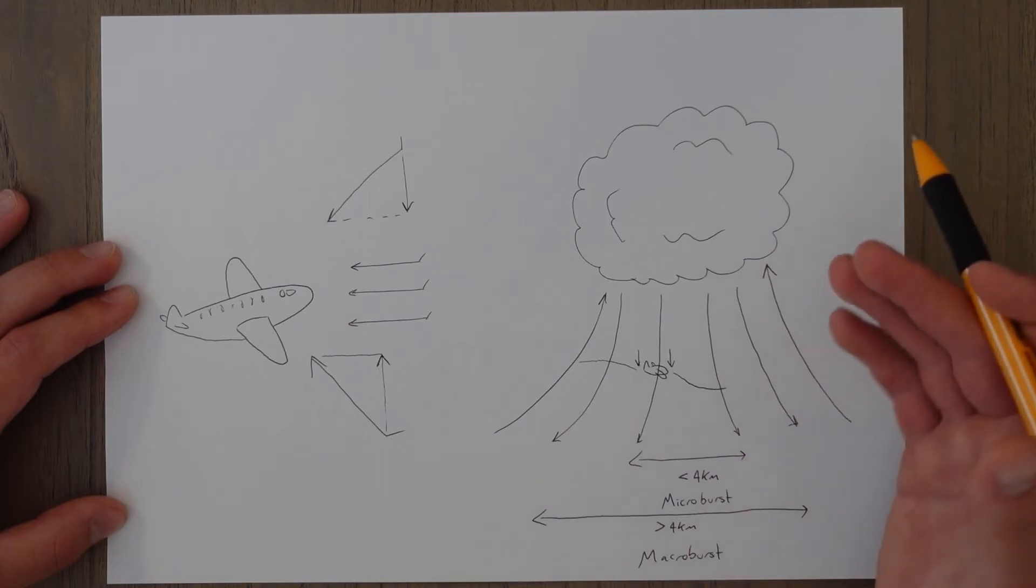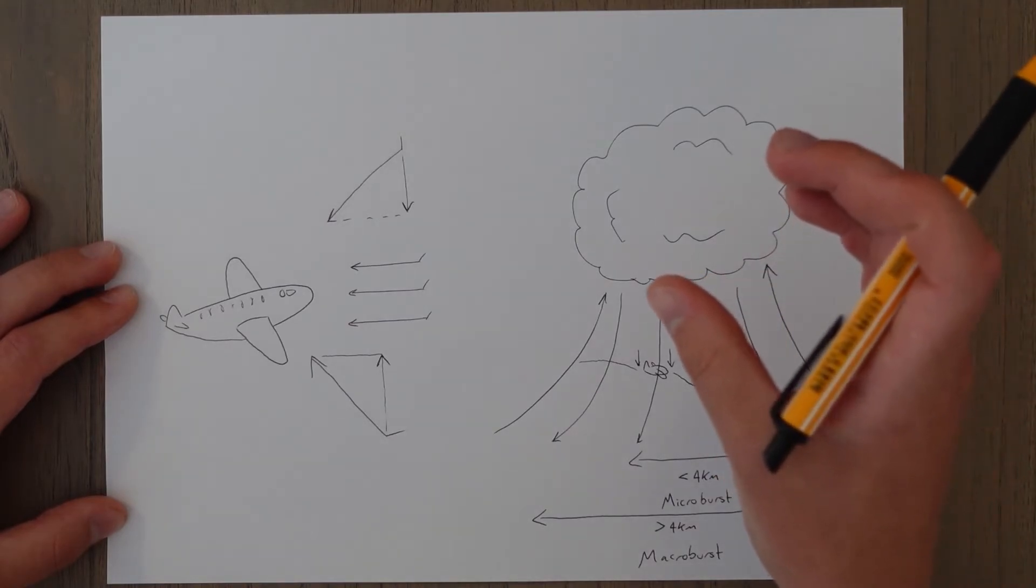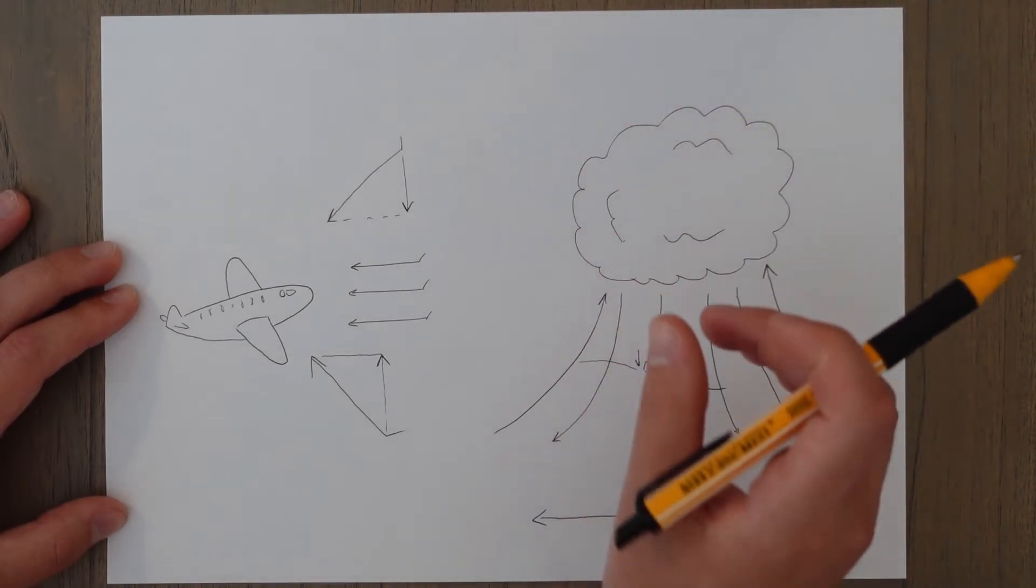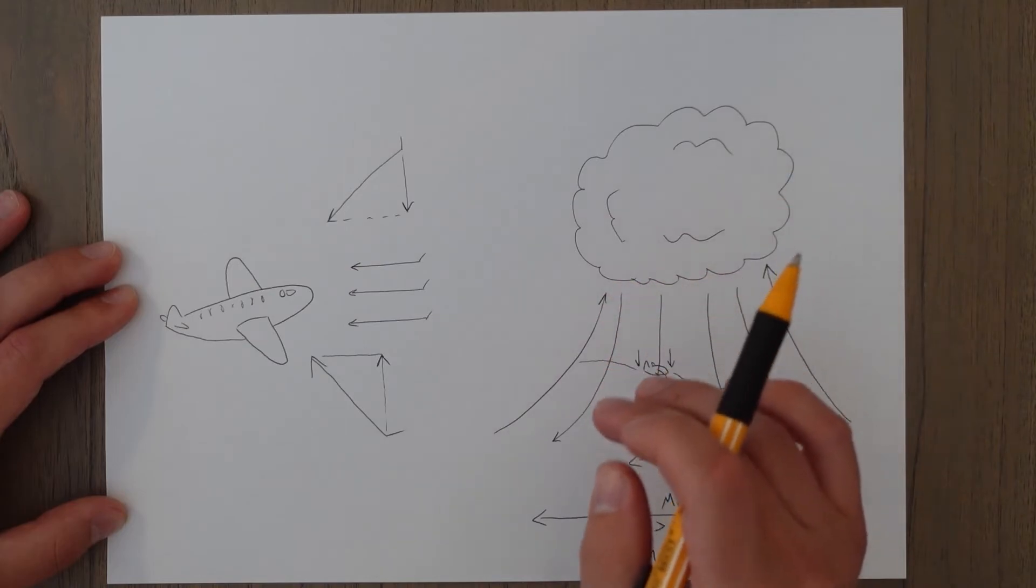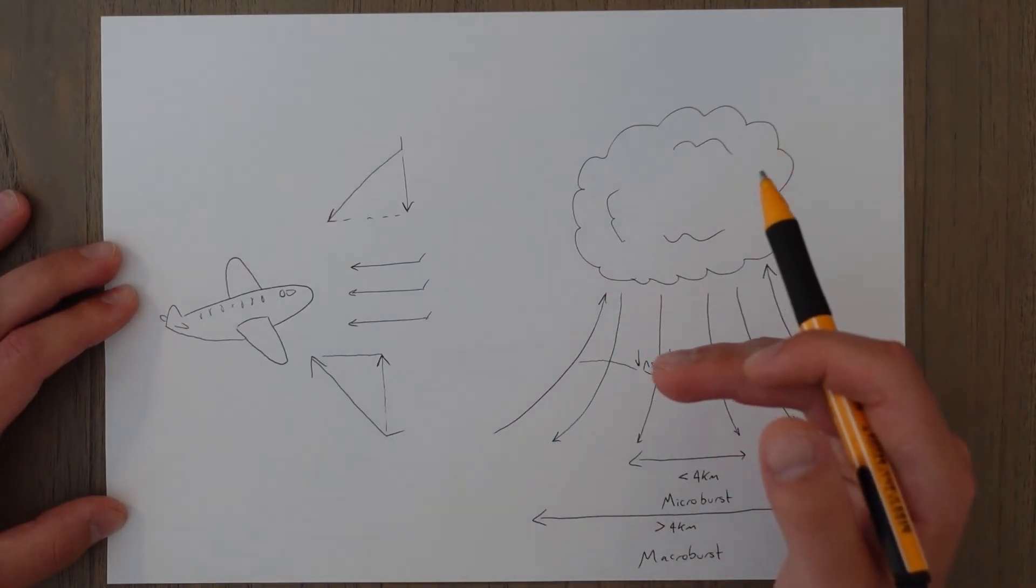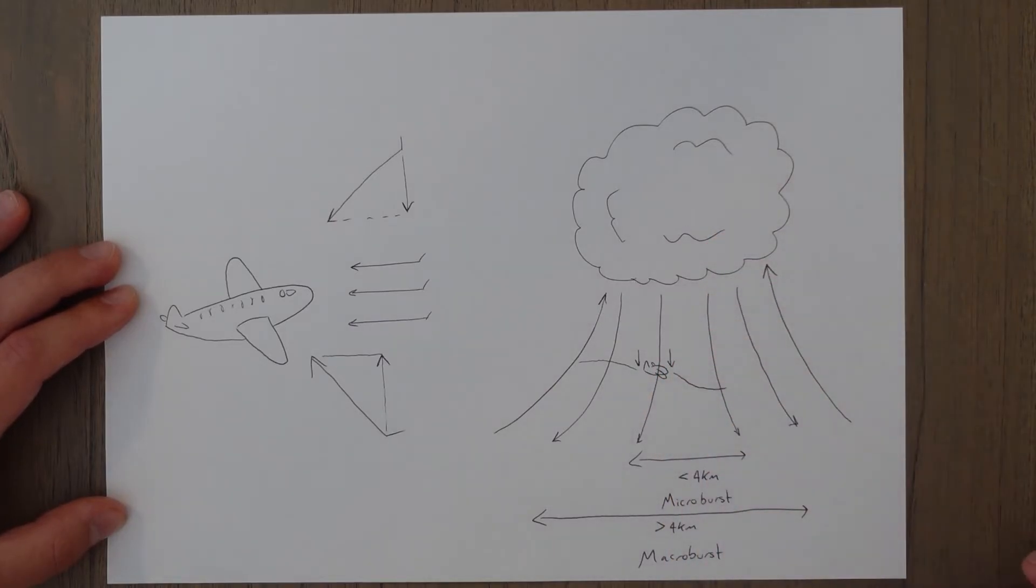So around storms these are going to be quite close to the ground, and because the storm isn't a very high-up phenomenon—it certainly rises very high, but the base of the storm is quite low—so if you're flying below it you're already going to be quite close to the ground. You experience a microburst, it's going to push you a lot closer to the ground.